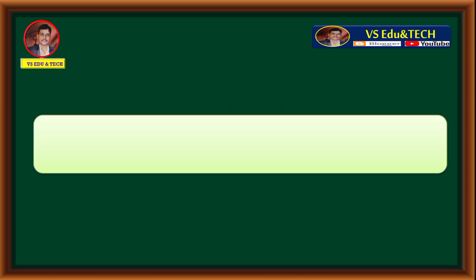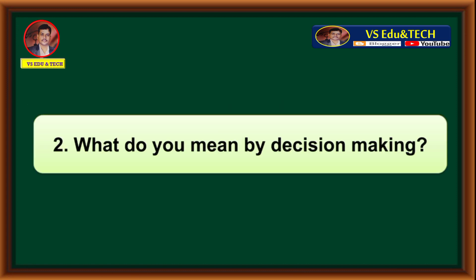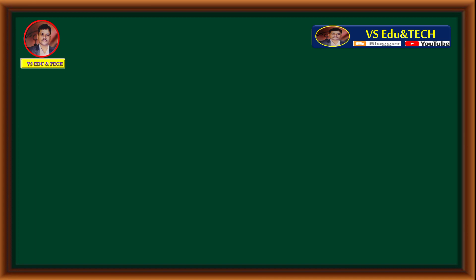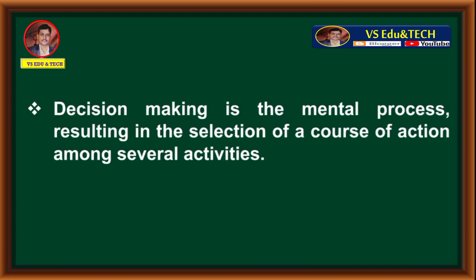Second question: What do you mean by decision making? Answer: Decision making is the mental process resulting in the selection of a course of action among several alternatives.